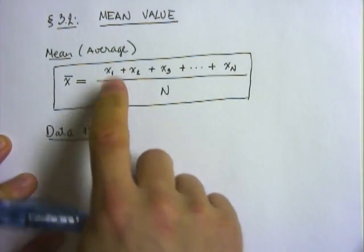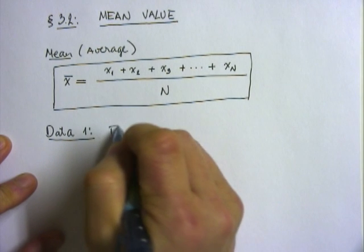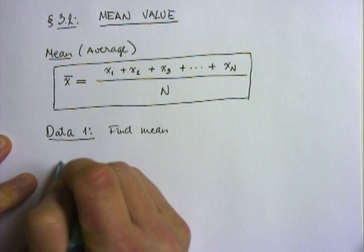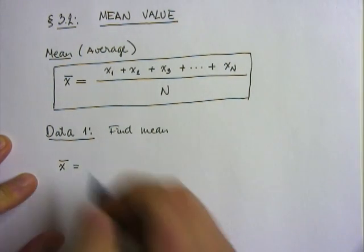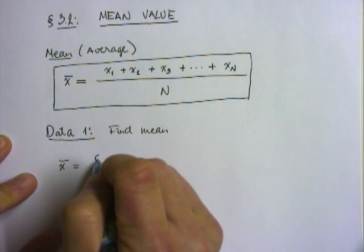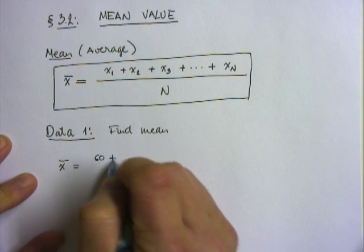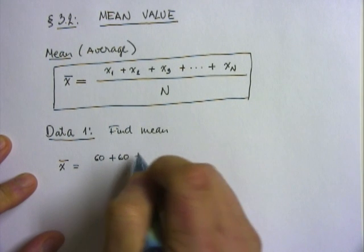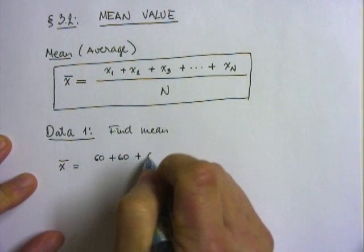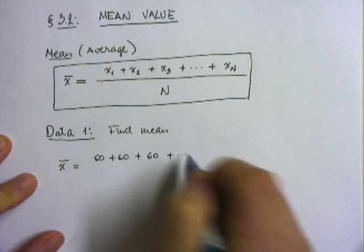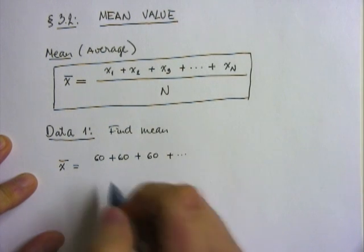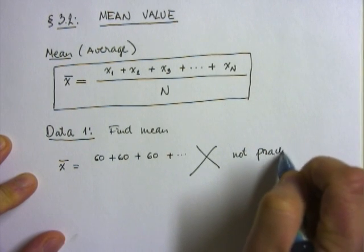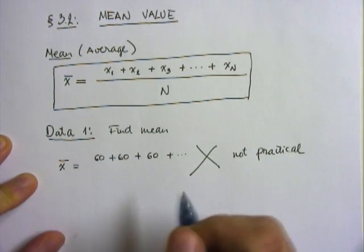Let's say we're gonna find mean value. The x bar for the mean value here is gonna be 60 add to 60 again. And here you can start seeing that we are wasting time, we keep adding the repeats of the 60. Doing it this way is not practical.